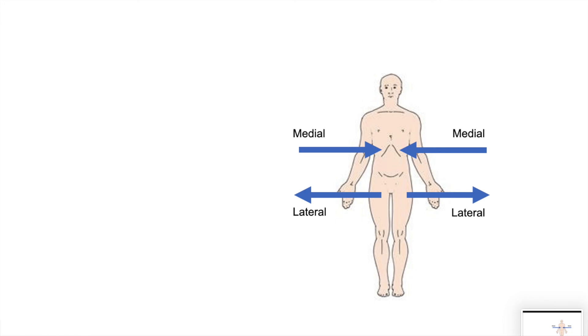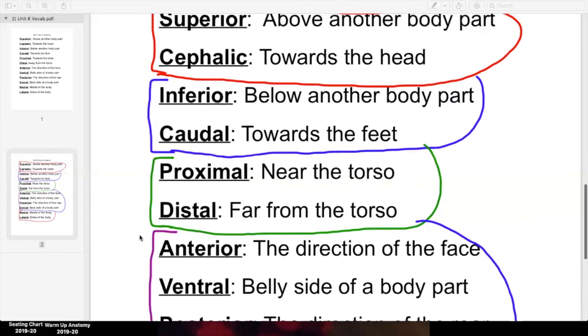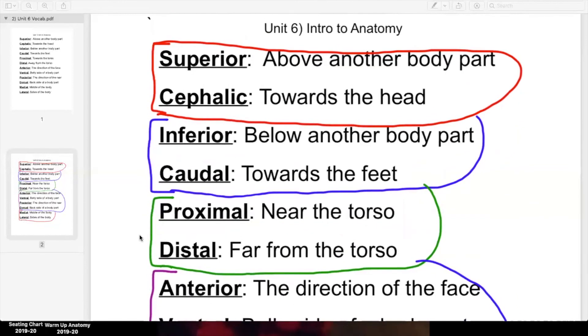Medial, you are moving closer to that center line. Lateral, you are moving farther away from that center line. So your shoulder would be lateral to your neck. Or your arm would be lateral to your chest muscle because it's further to the side. Medial, your chest muscle would be medial to your arm, because it's closer to the middle. These are words that pop up throughout the entire year, describing locations, describing body parts.